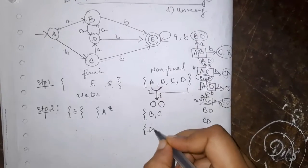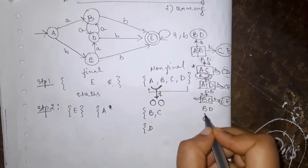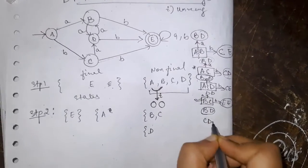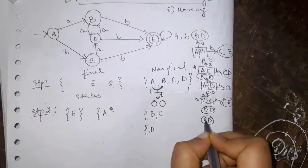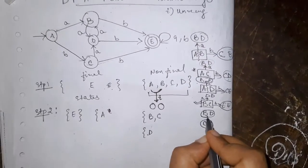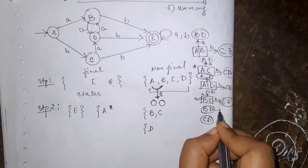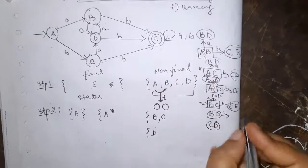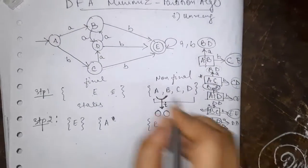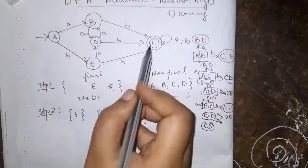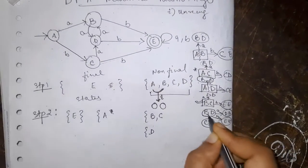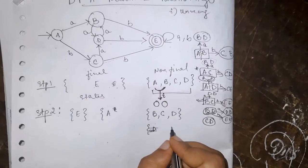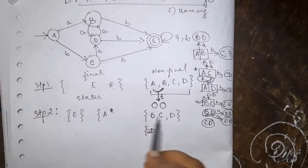Now B D. If B D becomes same, the result for B D same will be for C D because B and C are in the same group now. So for B D on giving A it goes to D B. On giving B it goes to E E. So this will be same. B and D are also same. So A B C D is now broken like this.